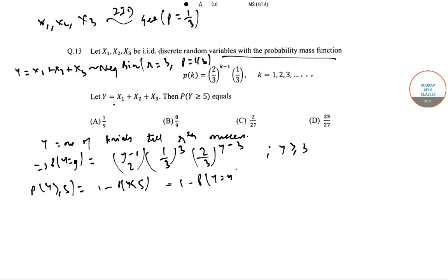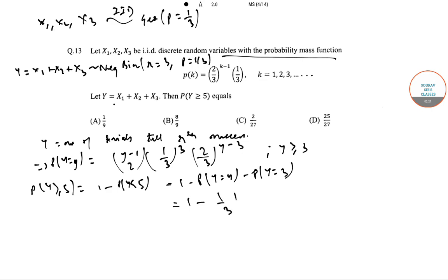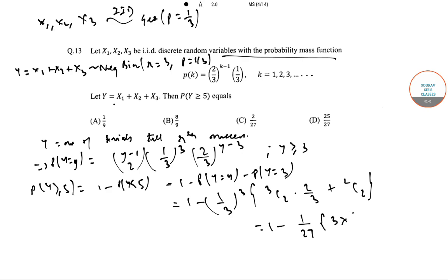This equals 1 - P(Y = 4) - P(Y = 3), which can be written as 1 - (1/3)^3 × [C(3,2) × (2/3) + C(2,2) × 1]. This simplifies to 1 - (1/27) × (3 × (2/3) + 1) = 1 - (1/27) × 3 = 8/9. So the correct option is option B.